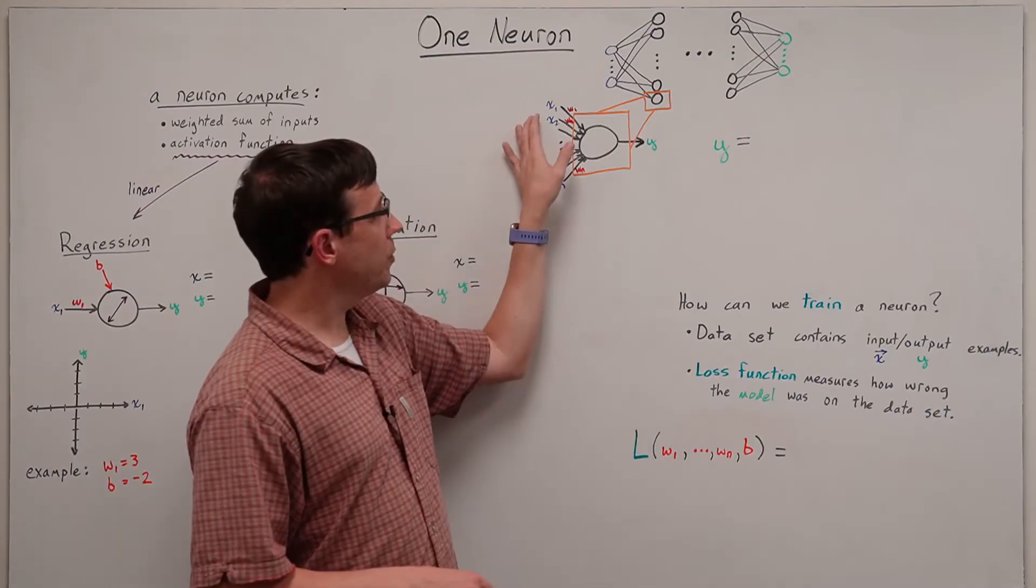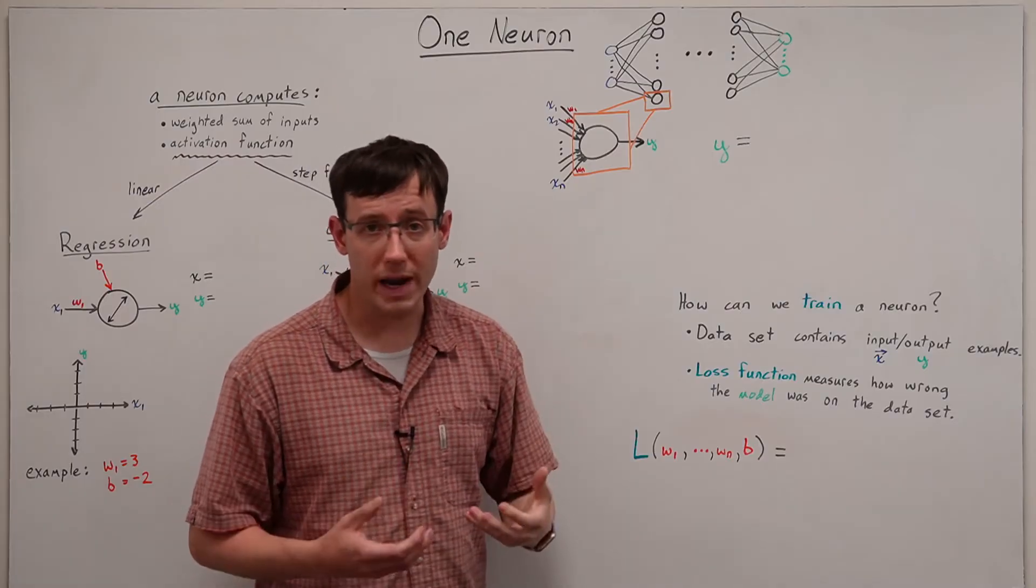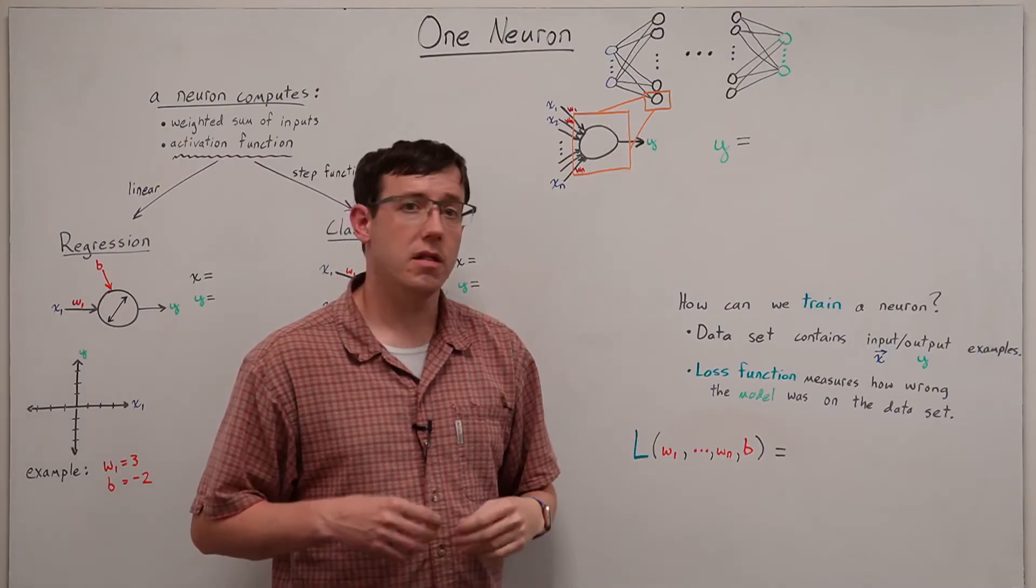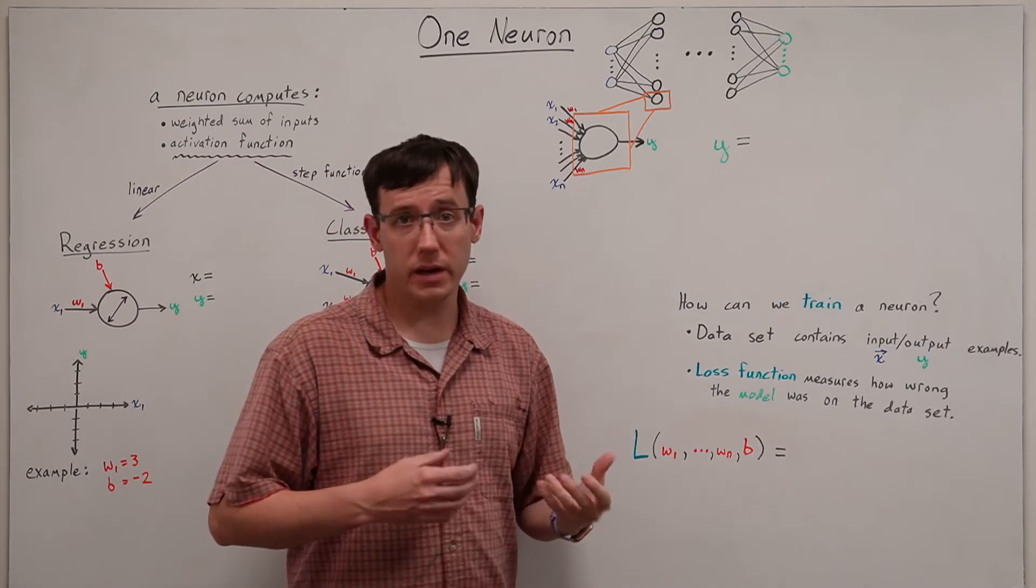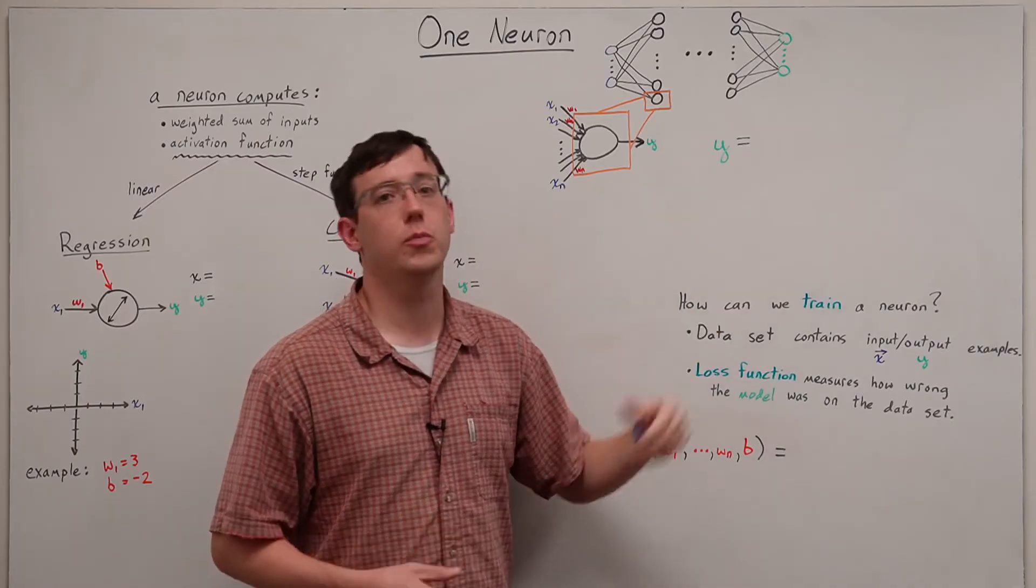First, we multiply each of the inputs by the corresponding weight and sum them up. Then that sum of weighted inputs is passed through an activation function to produce the output.